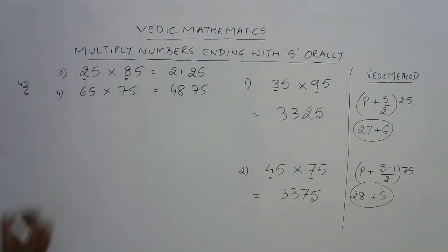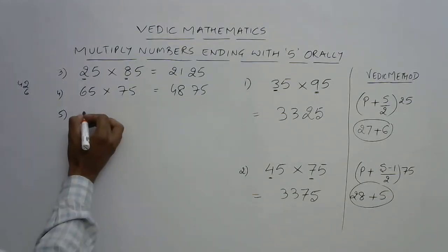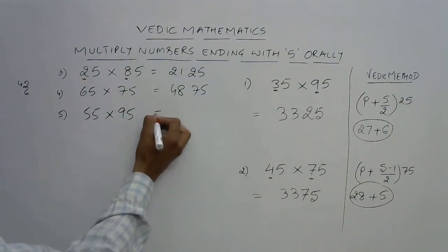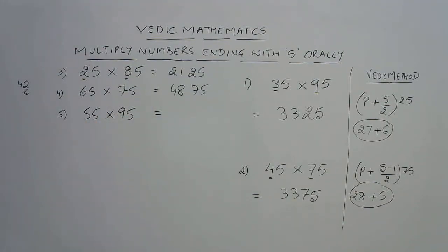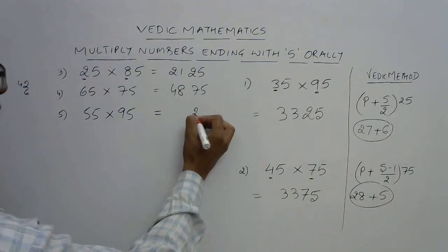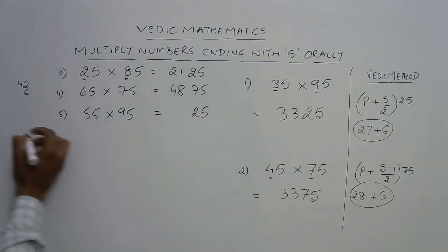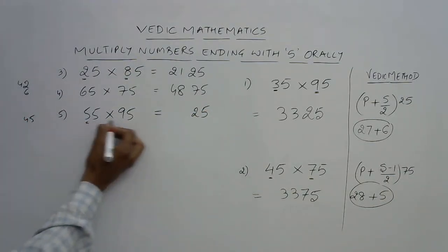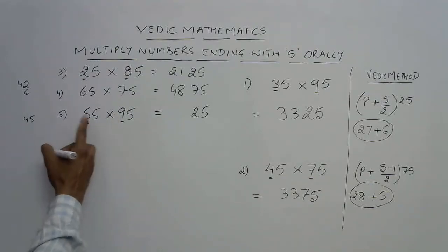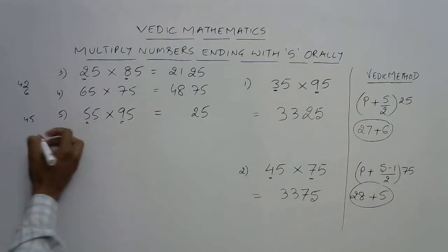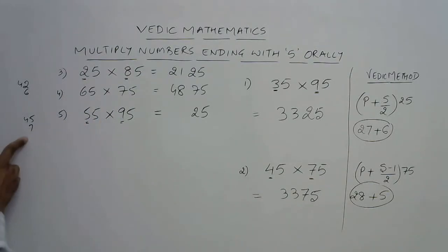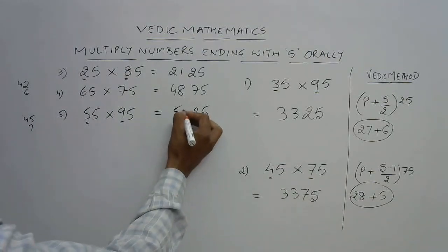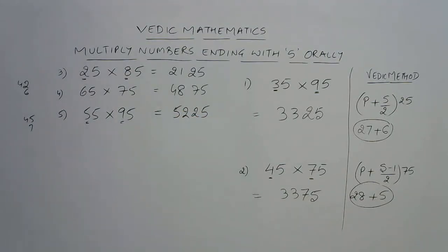Let's take some more examples. We have 55 and 95. Now again, 9 + 5 = 14. So 14 is even, so our answer is going to end with 25. 9 × 5 = 45, product of these two. And half of the sum, sum is 14, and half is 7. So if you add 45 and 7, this is going to give you 52. So 5225 is the product.